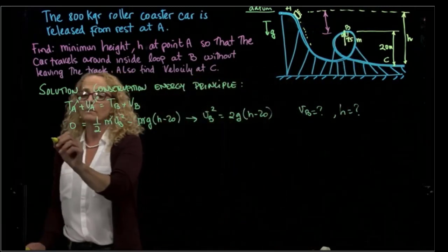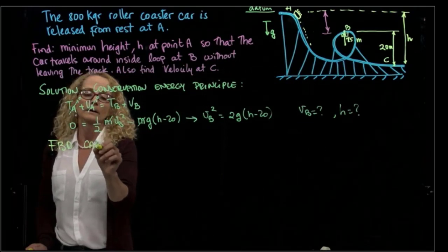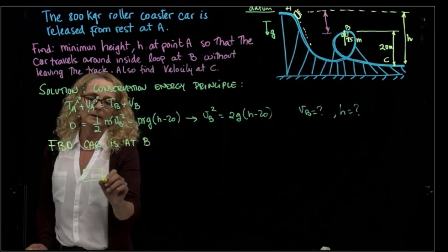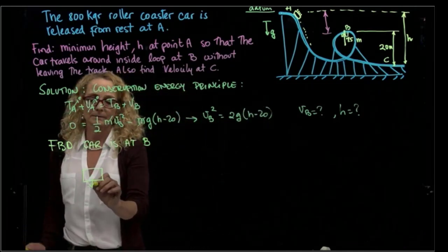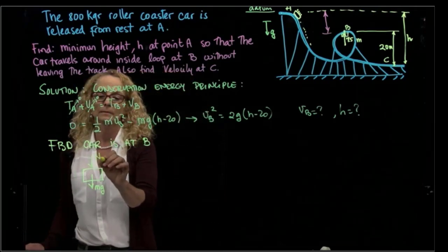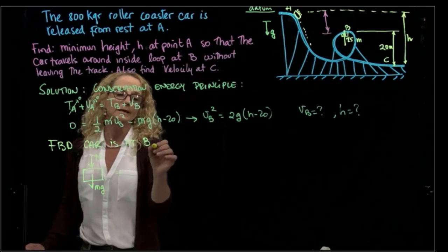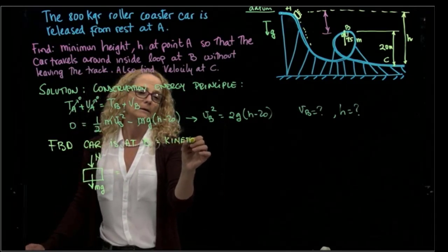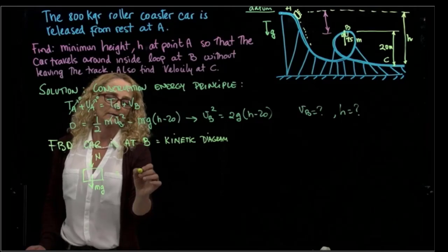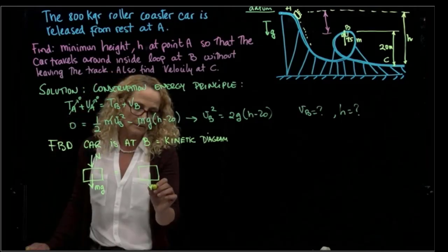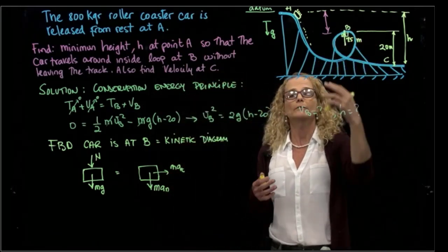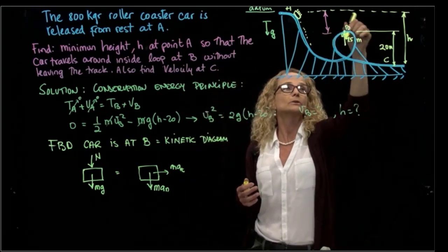So I'm going to do my free body diagram when the car is at B. So when I have my car at B, I have the gravity, and I have a normal force. And that will be equal to the kinetic diagram. And my kinetic diagram, when we have a system that does a curve, it has a curved path, we have two accelerations. One in tangent direction and one in normal direction.